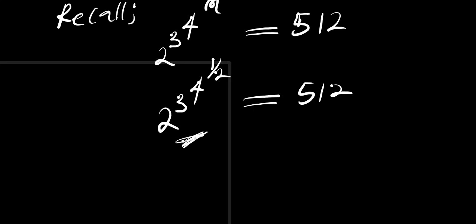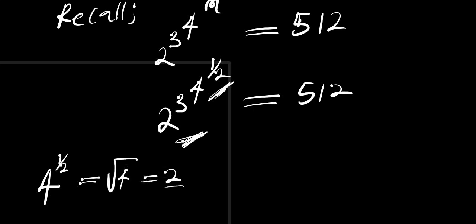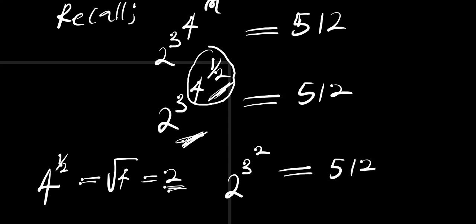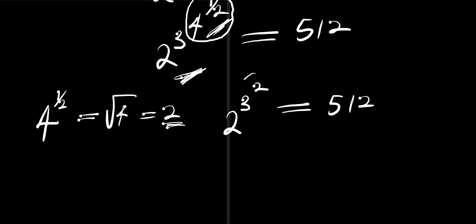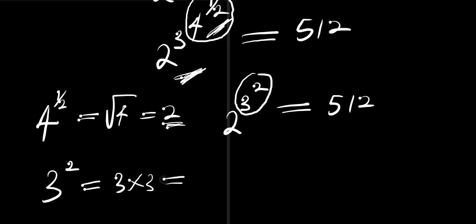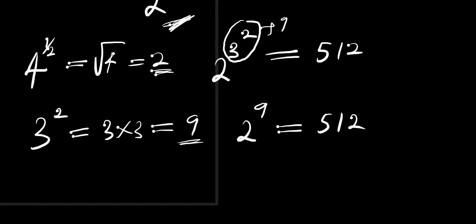Whenever you have an exponential problem like this, you start from the top two numbers. We have 4 to the power of 1 over 2, which means the square root of 4, and this is 2. So we replace those two numbers with 2, giving us 2 to the power of 3 to the power of 2. Next, 3 to the power of 2 means 3 times 3, which equals 9. So we now replace those two numbers with 9, giving us 2 to the power of 9.